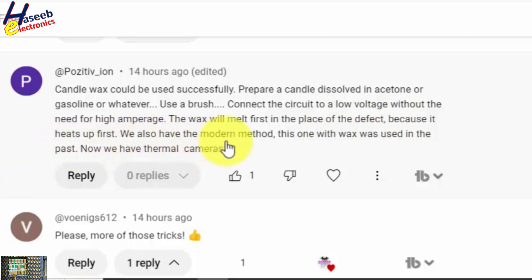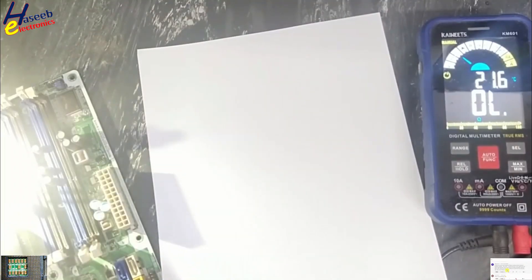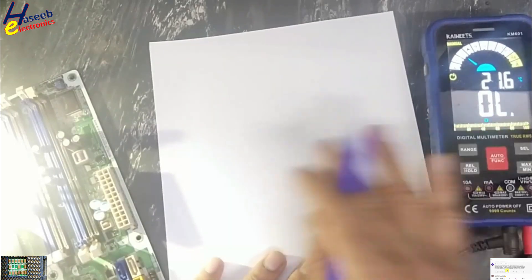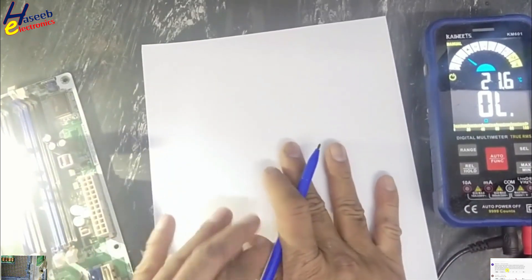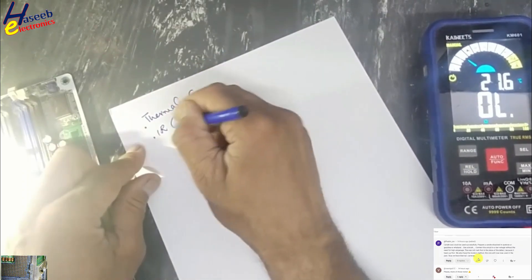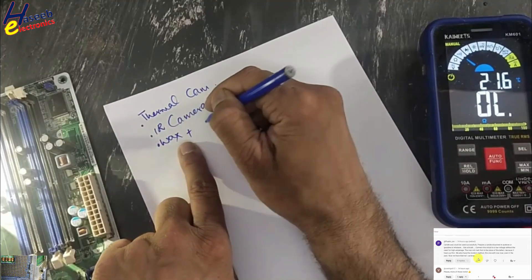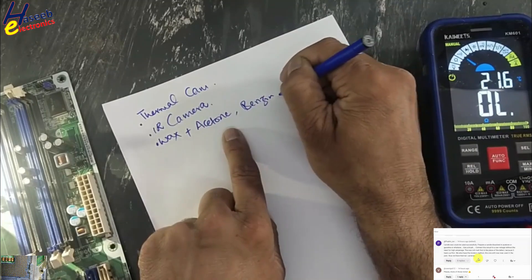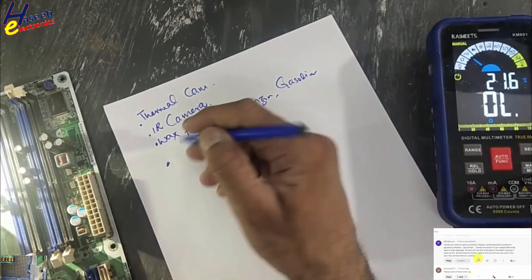We also have the modern method now - we have thermal cameras. This is a very beautiful and informative comment. I am thankful from my side and on behalf of my viewers for writing this comment. Thermal camera, IR camera, wax plus acetone, benzene, thinner, hand sanitizer.